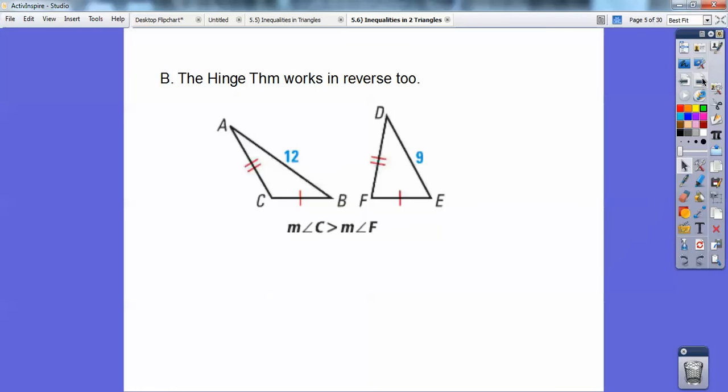And so, the Hinge Theorem works in reverse too. It says if you have two sides equal to two sides right here, and the third side is bigger than this third side, then the included angle over here would be bigger. This angle C is bigger than this angle F right here.